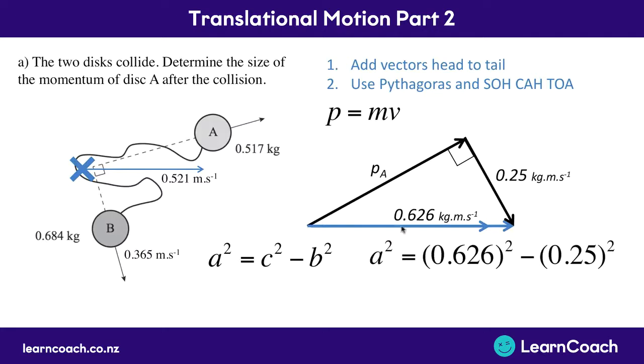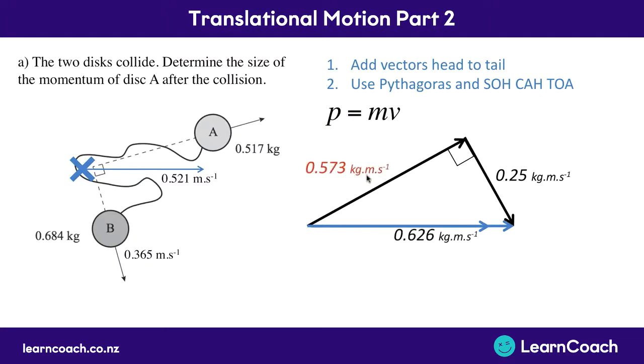So plugging in C squared, our long side, we've got 0.626 squared minus 0.25 squared is going to give us 0.329. We square root both sides and that gives us a final momentum of 0.573 kilogram meters per second.